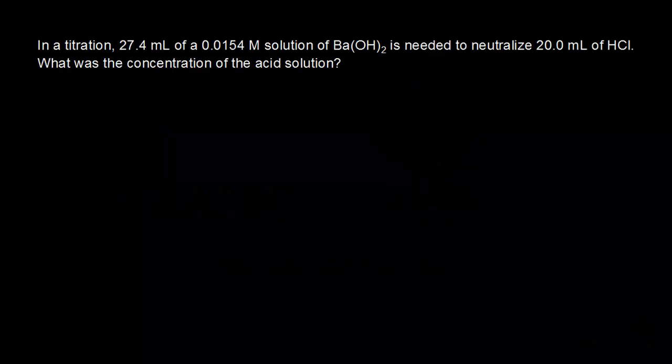Let's do another titration problem. Once again, our goal is to find the concentration of an acidic solution. So we have 20.0 milliliters of HCl. And this time, instead of using sodium hydroxide, we're gonna use barium hydroxide. And it takes 27.4 milliliters of a 0.0154 molar solution of barium hydroxide to completely neutralize the acid that's present.